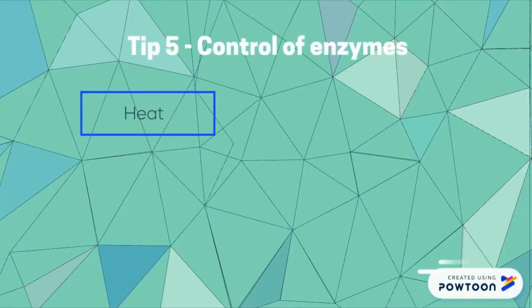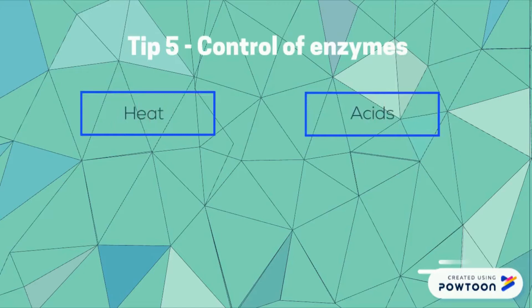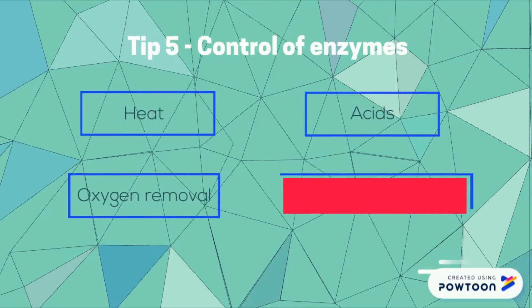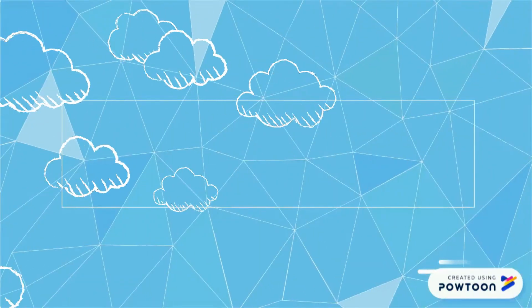For control of enzymes, these are the factors that can influence the effectiveness of an enzyme, which are: heat, acid, oxygen removal, and chemicals which are antioxidants.